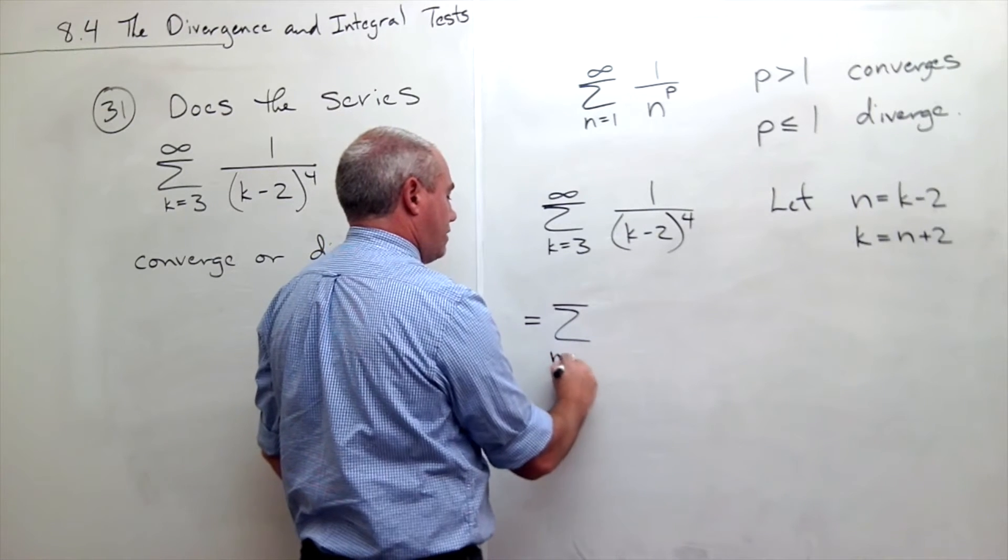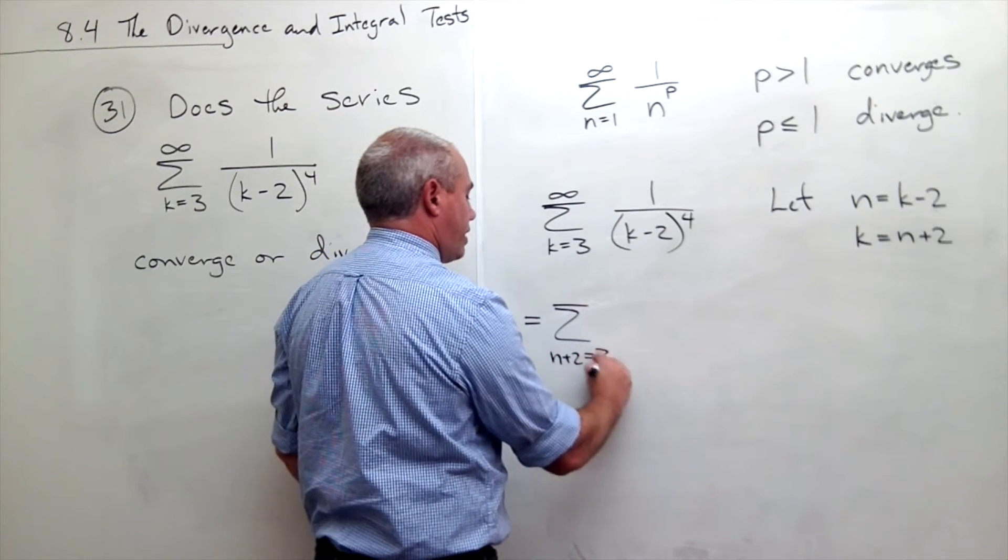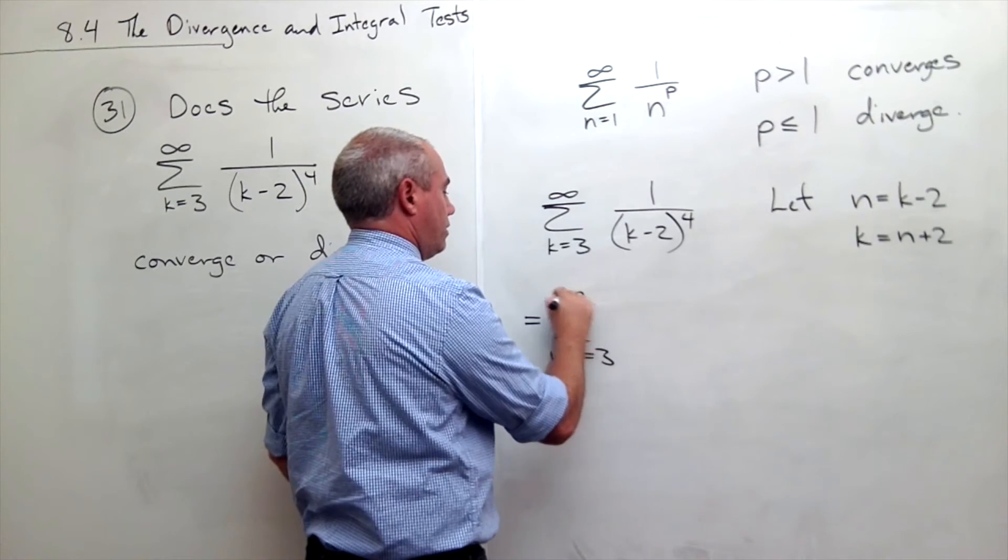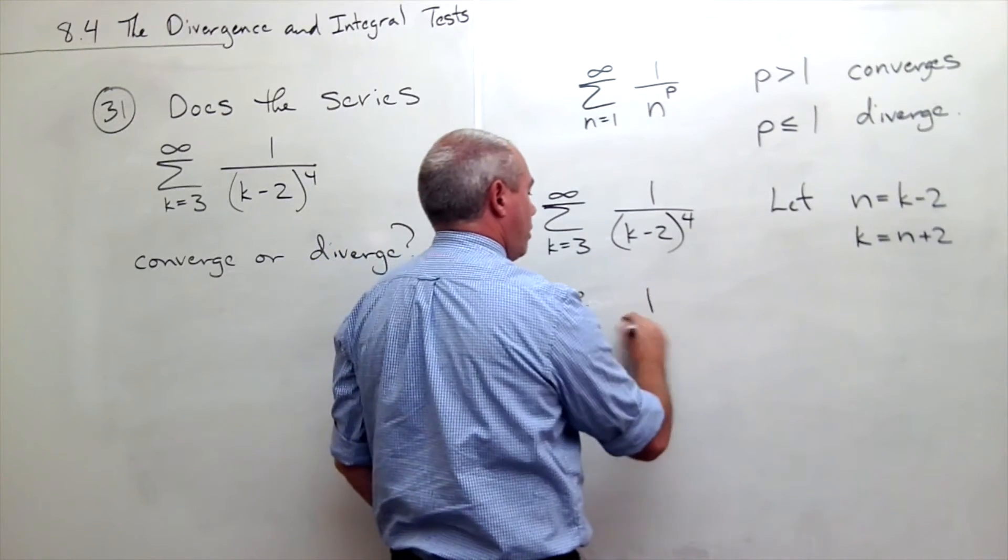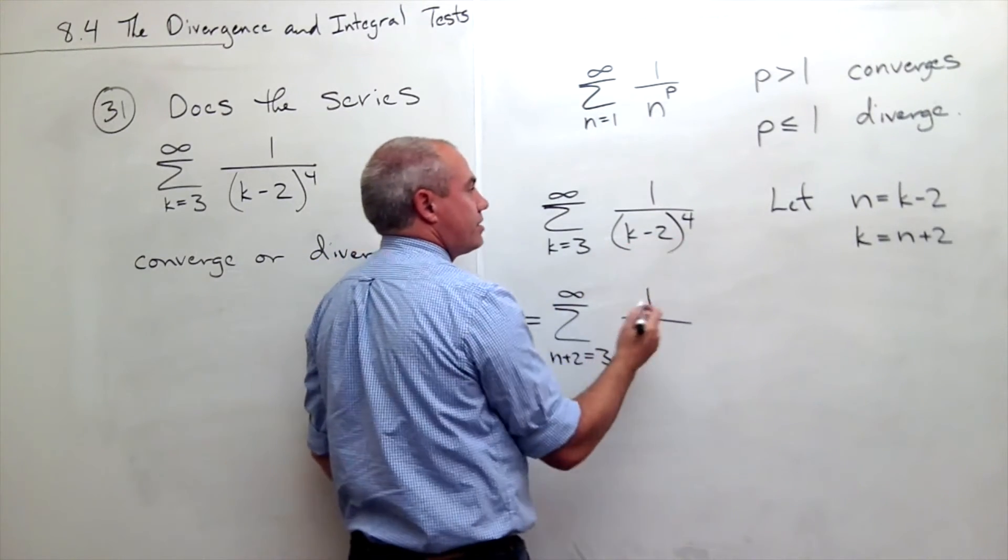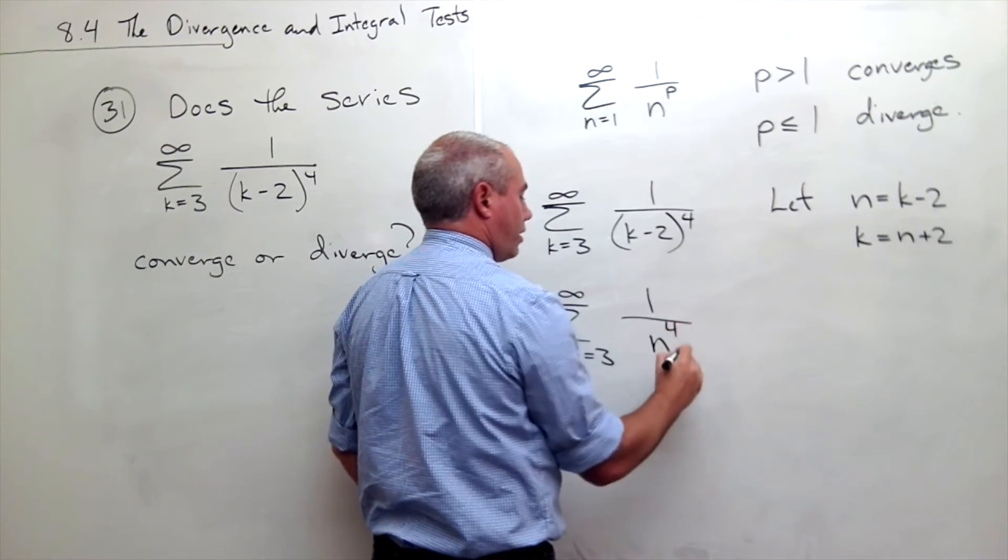so I could write n plus 2 goes from 3 to infinity of 1 over, k minus 2 is n, to the 4th.